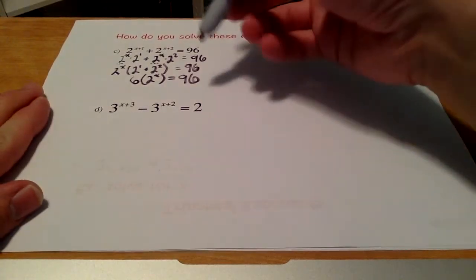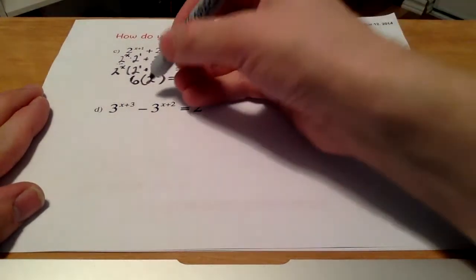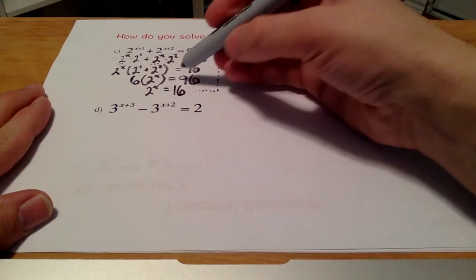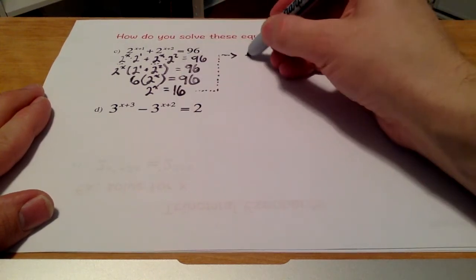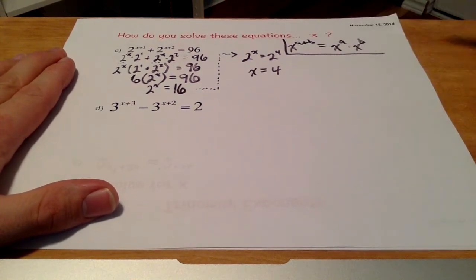So my next step here is very similar to the last couple problems we looked at. Remember, I want to divide out this 6 first. So 96 divided by 6 is 16. We know that we can rewrite 16 as a base of 2. So that was the trick there, making sure that we understand this exponent law.